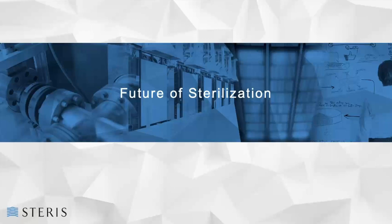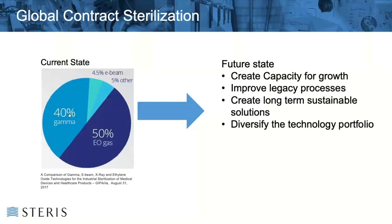Now that we've talked about our history and current state, let's look into the future of our sterilization industry. A graphic from a 2017 publication by IAEA/GIPA, which STERIS supported, really emphasized the reliance we currently have on two technologies — gamma radiation and EO make up approximately 90% of sterilization capacity. We need a future state of available and sustainable capacity and technology. We need to avail of the opportunity to improve legacy processes while continuing to diversify and create new technology solutions.